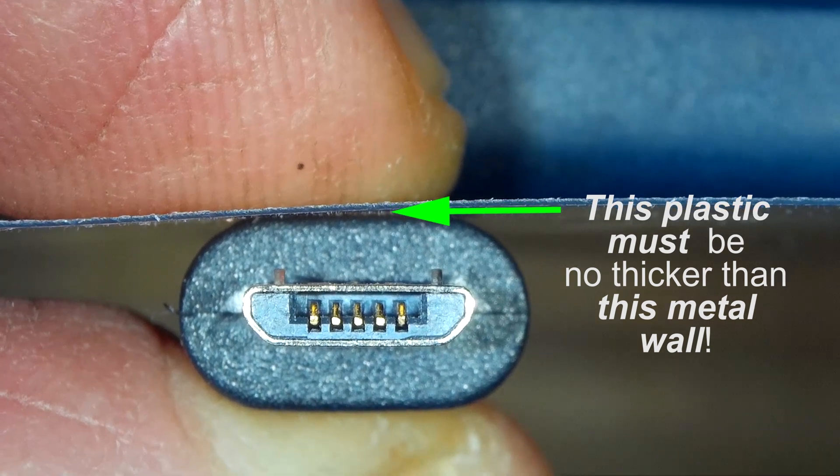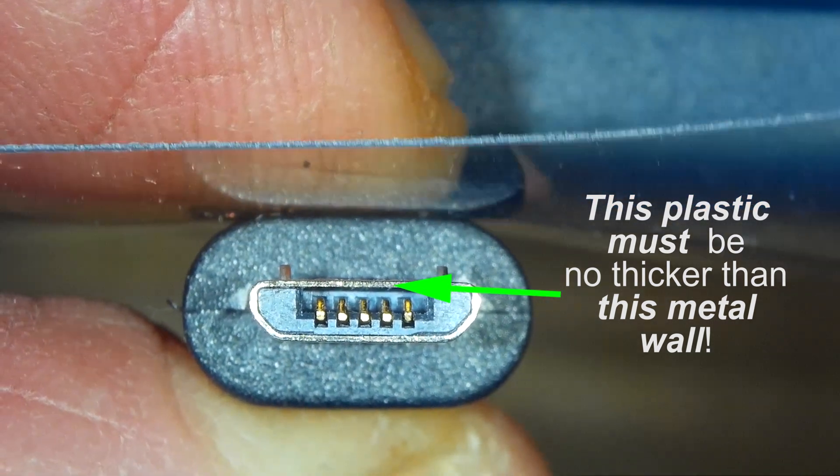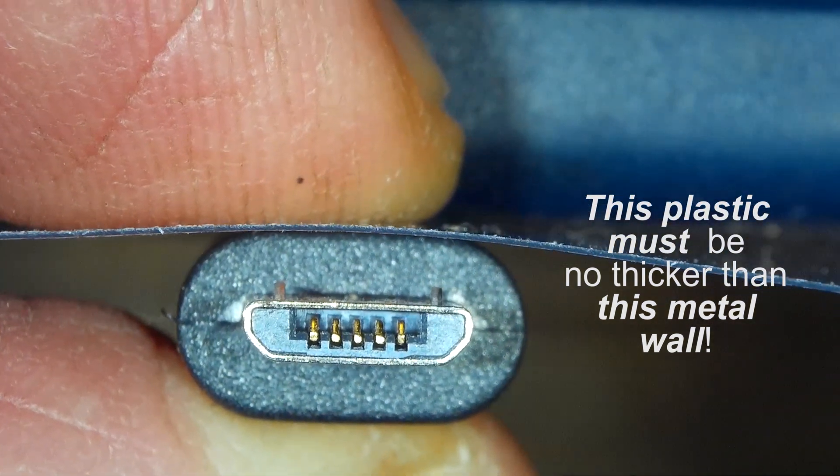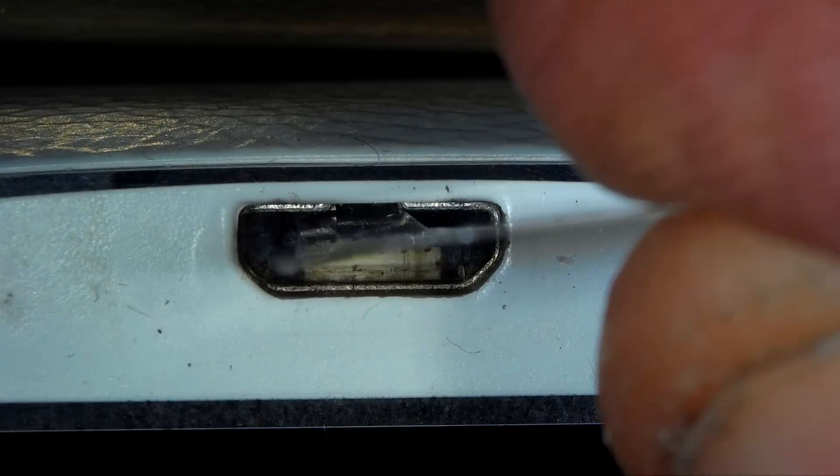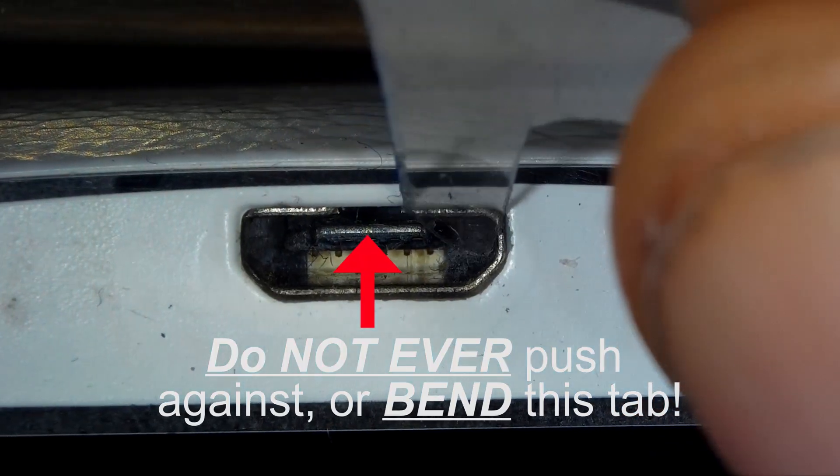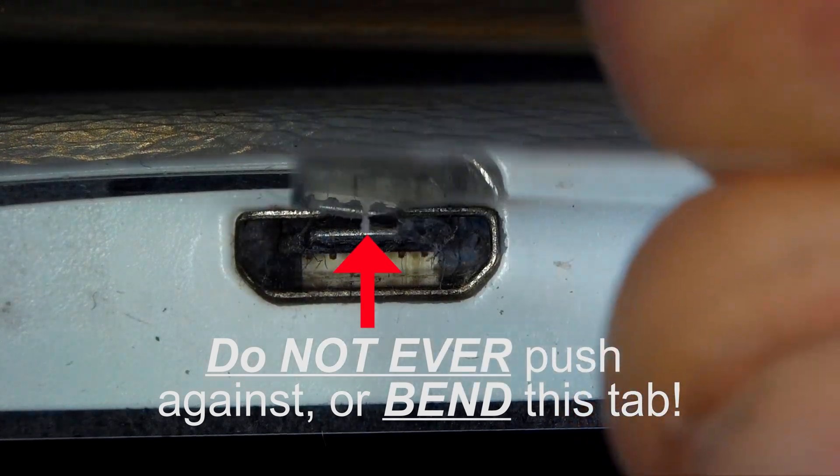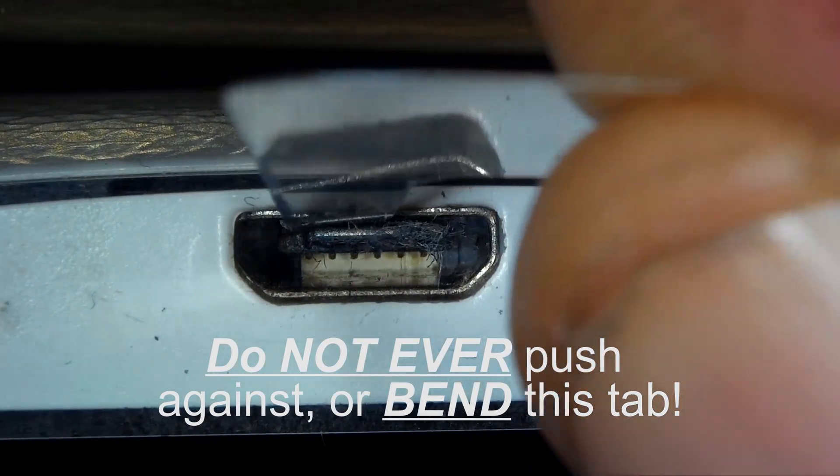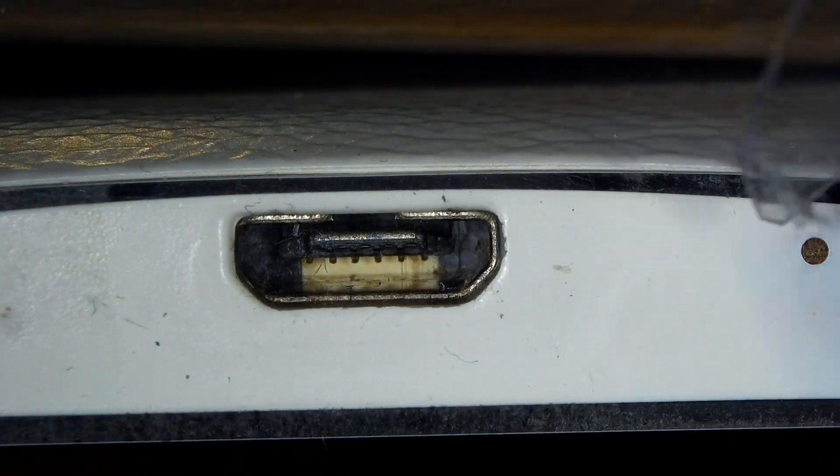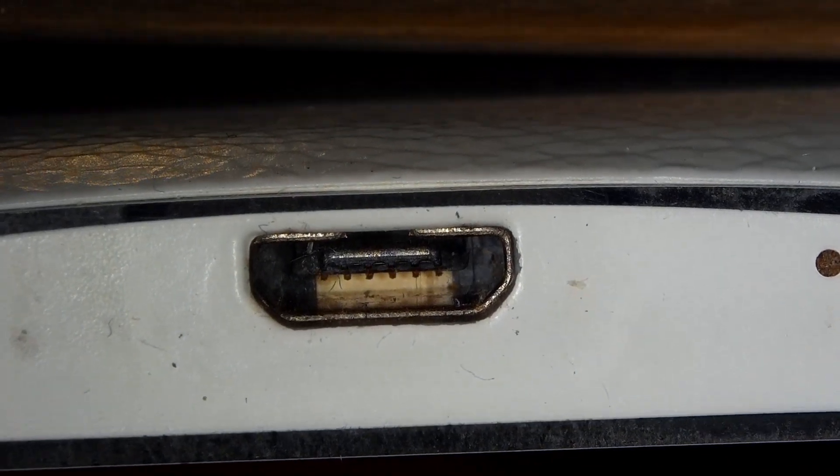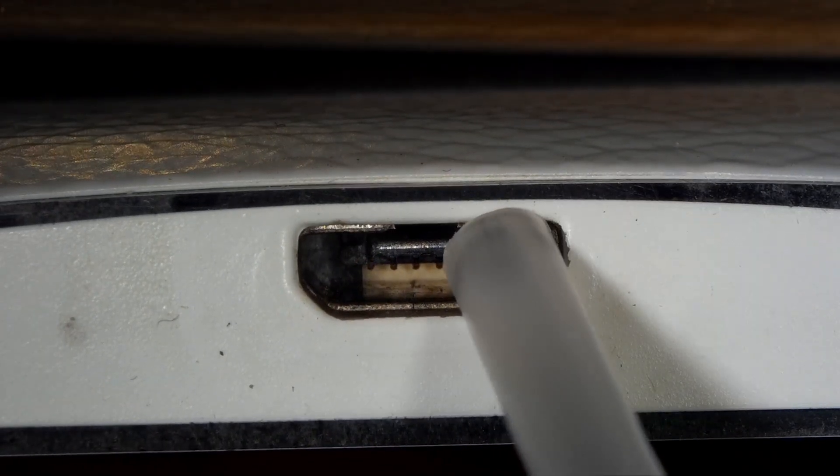It's important to use plastic that is thinner but no thicker than this wall of the charge cord connector end. If the plastic used is at all thicker, the tab will get shoved over, bent or broken, so be careful. After the swipe, blow it out the same way I mentioned previously. Now your charge cord connector should go in all the way.